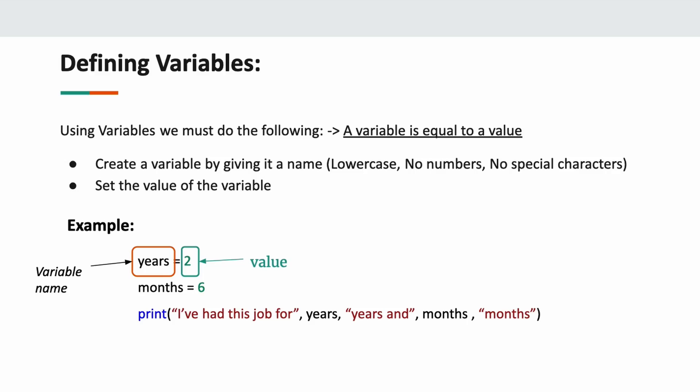Now let's talk about the Python basics. I'm going to talk a little bit about Python syntax as well as a few other key things you're going to learn in this episode. To kick things off, we have the term variable. A variable is equal to a value — a variable is a word that holds a value. In my example, I have two variables: years and months. The value of years is two and the value of months is six.